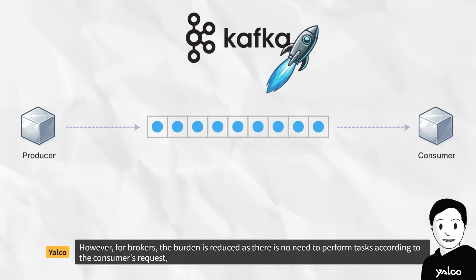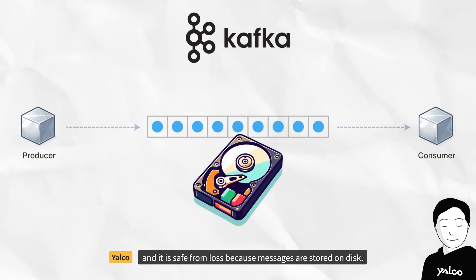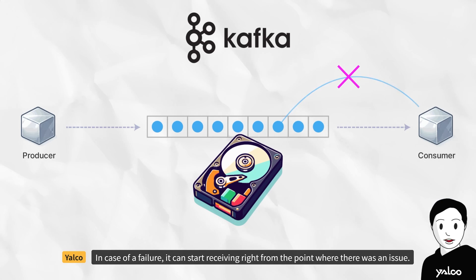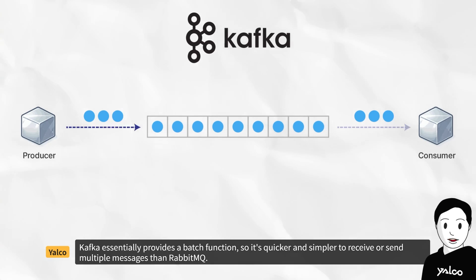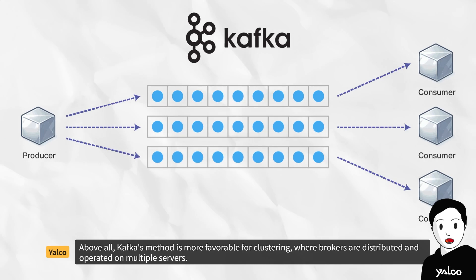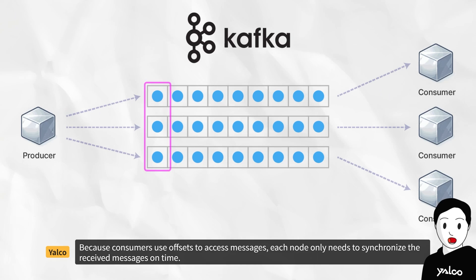However, for brokers, the burden is reduced as there is no need to perform tasks according to the consumer's request, and it is safe from loss because messages are stored on disk. Depending on the need, a consumer can receive a specific message multiple times. In case of a failure, it can start receiving right from the point where there was an issue. Although the disk is slower than memory, if you store sequentially like Kafka, you can maximize performance. Kafka also provides a batch function, so it's quicker and simpler to receive or send multiple messages than RabbitMQ. Above all, Kafka's method is more favorable for clustering, where brokers are distributed and operated on multiple servers, because consumers use offsets to access messages and each node only needs to synchronize the received messages on time.